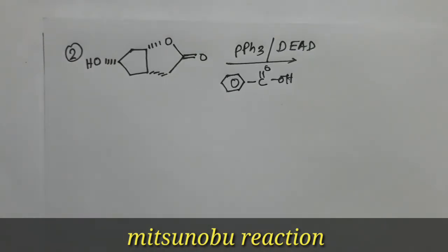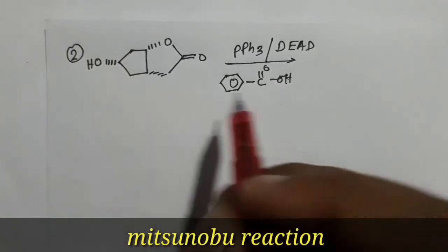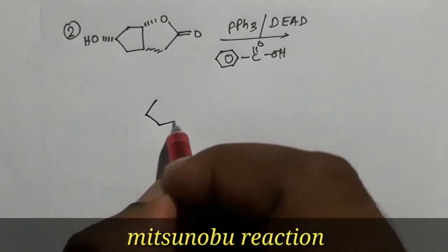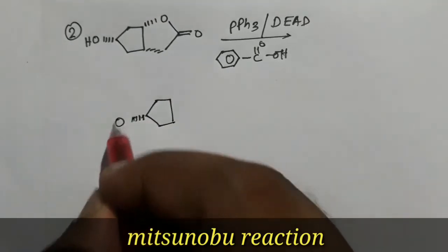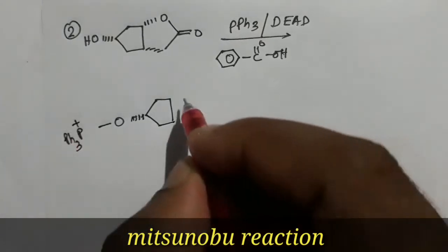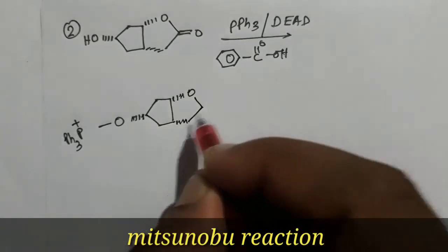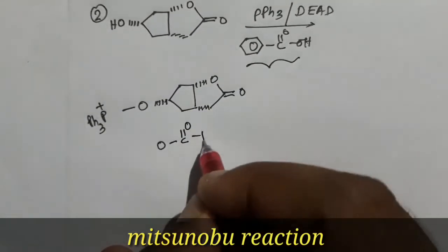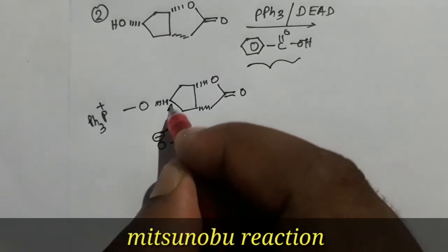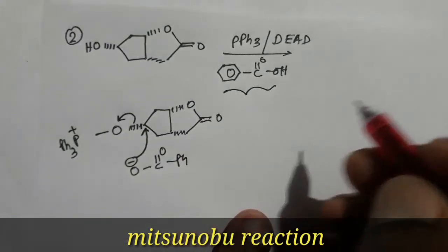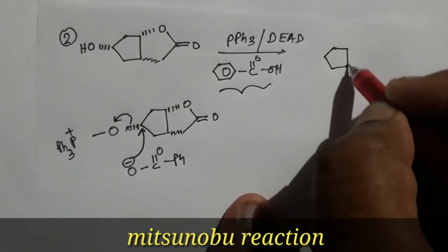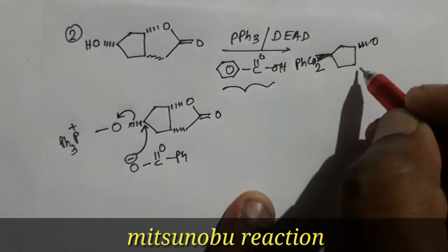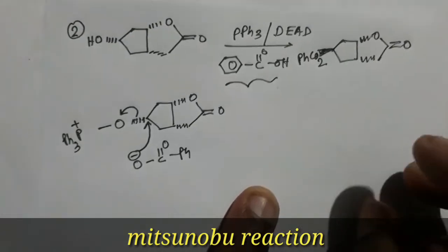Another example of the Mitsunobu reaction. Here the OH group is below the plane, and benzoic acid is the nucleophile. The OH will be converted to a good leaving group with triphenylphosphine. The benzoate anion — O double bond with phenyl group, with negative charge — will attack above the plane and the leaving group will leave. So the product will be the ester with the benzoate above the plane.